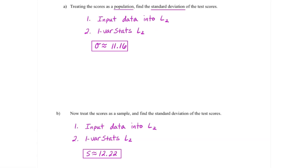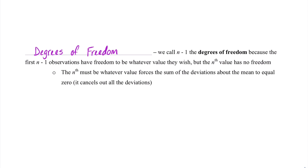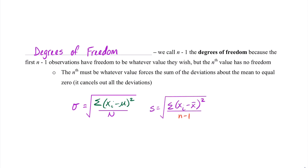The idea of this example is to compare sigma versus S. For both Parts A and B, we were using the same data, yet sigma and S provide different results. This is all based on the principle of degrees of freedom — that is, degrees of freedom refers to the n minus 1 while finding the sample standard deviation. When we found population standard deviation, we were dividing by the population size, capital N. When we found sample standard deviation, we were dividing our sum by n minus 1. We call n minus 1 the degrees of freedom because the first n minus 1 observations have the freedom to be whatever they wish to be. However, the nth value has no freedom — it's the value that forces the sum of the deviations about the mean to equal zero.